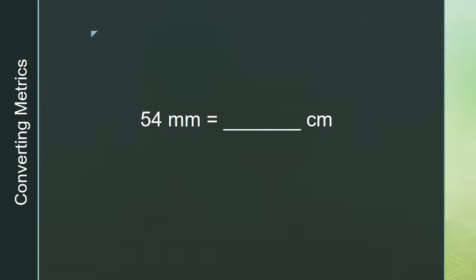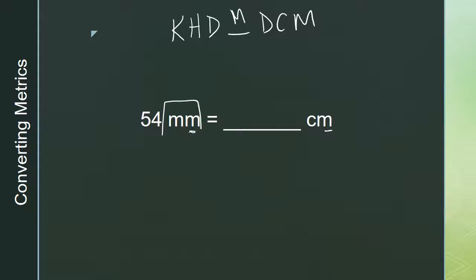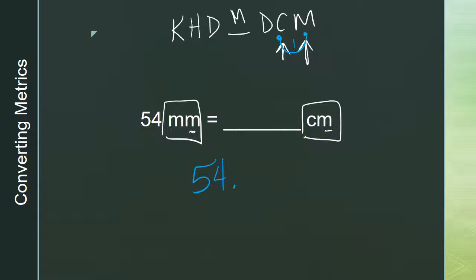Let's do one more example. I've got 54 millimeters converting to centimeters. The unit is meters — I'm measuring length. Step one: write the road — 'Kids hate doing math during cold months.' Where does it live? In the millimeter house. Where does it want to move? The centimeter house. That's just one jump, and I'm moving to the left, so I'm dividing by 10. I move the decimal point one place to the left and never leave my answer a hot mess. My answer is 5.4. So 54 millimeters is equivalent to 5.4 centimeters.